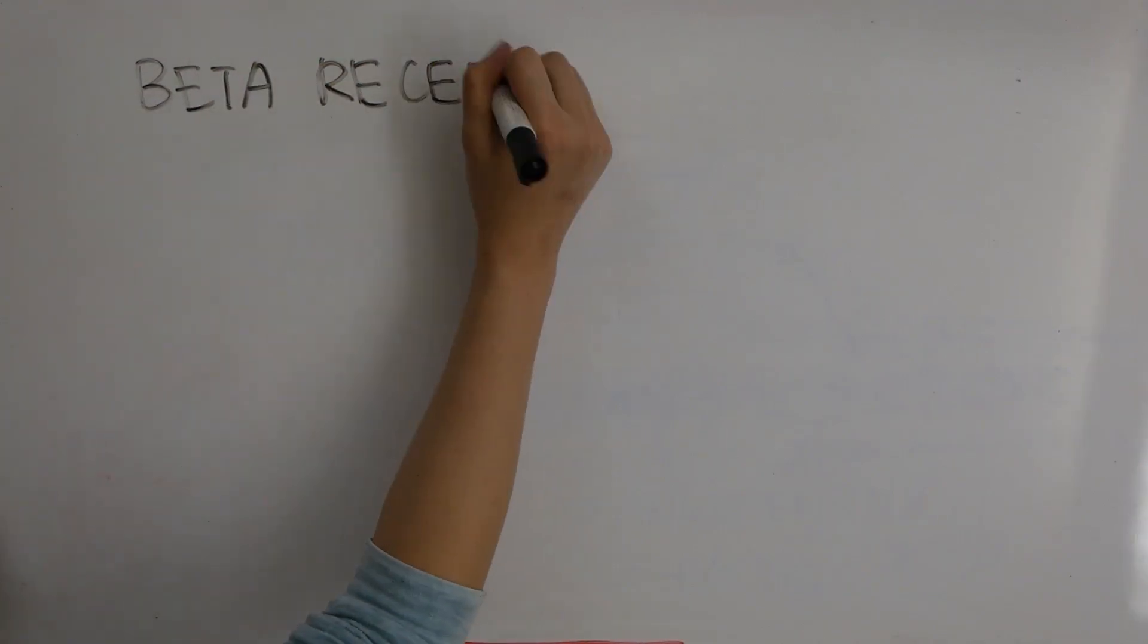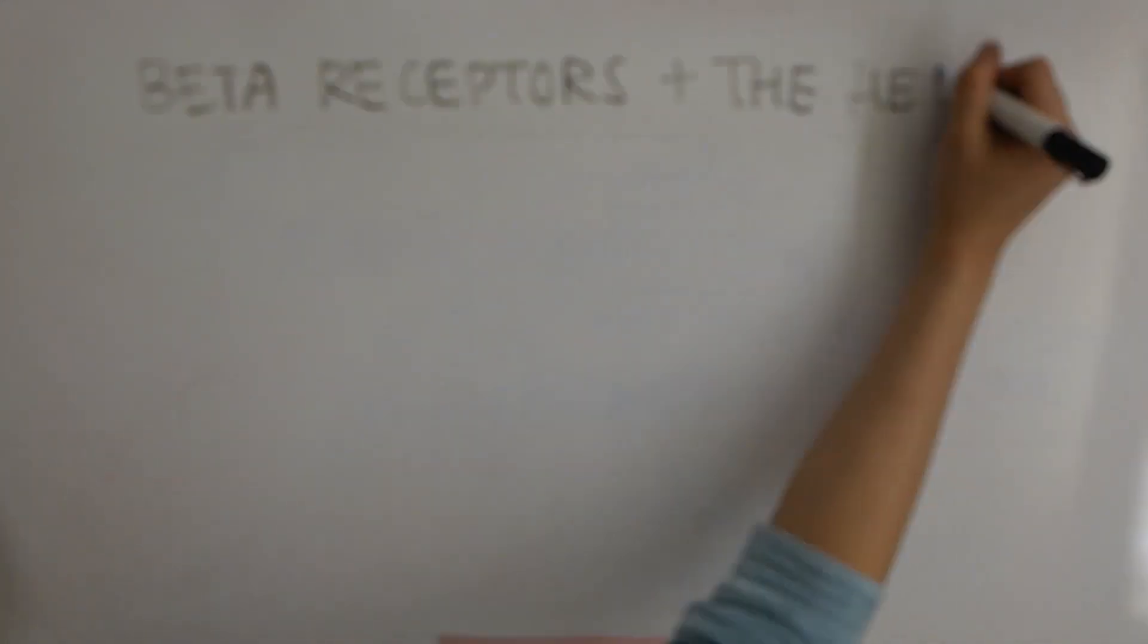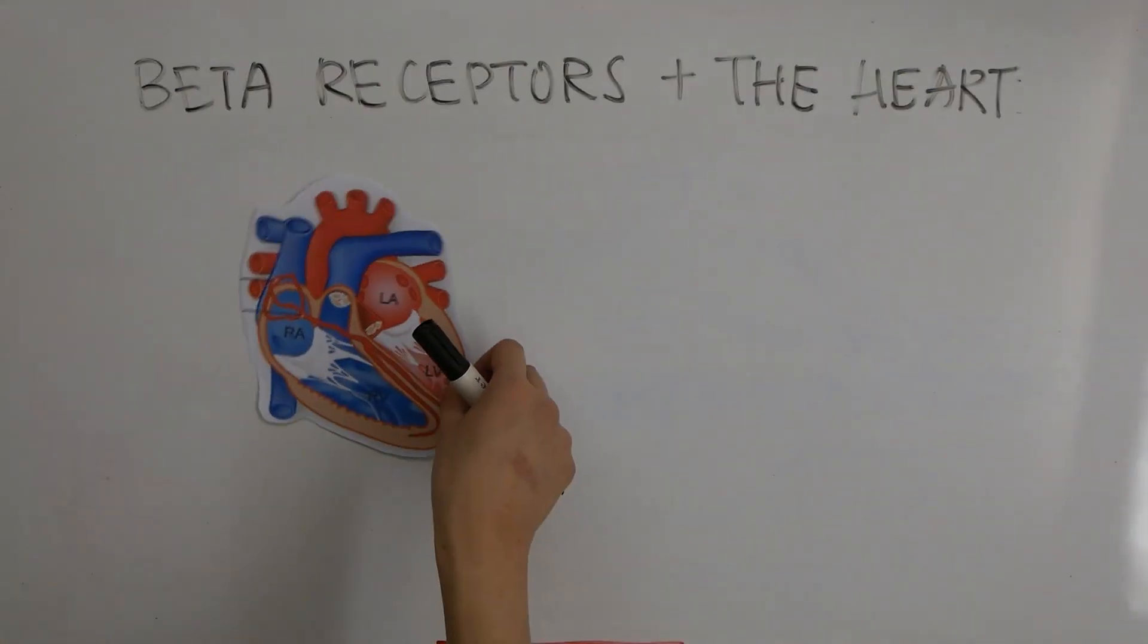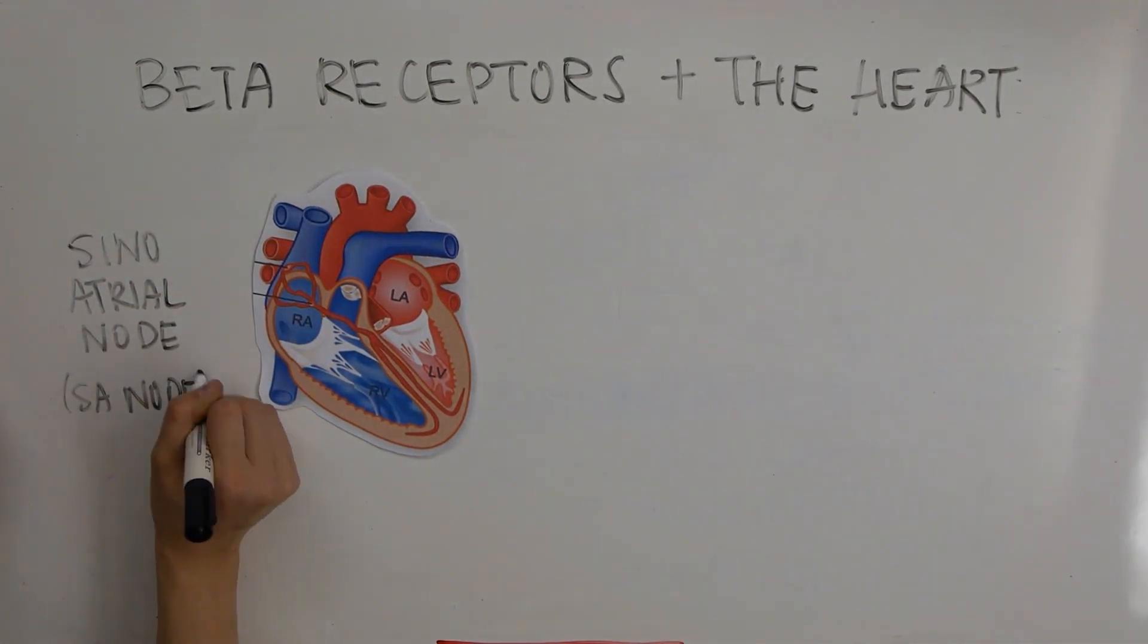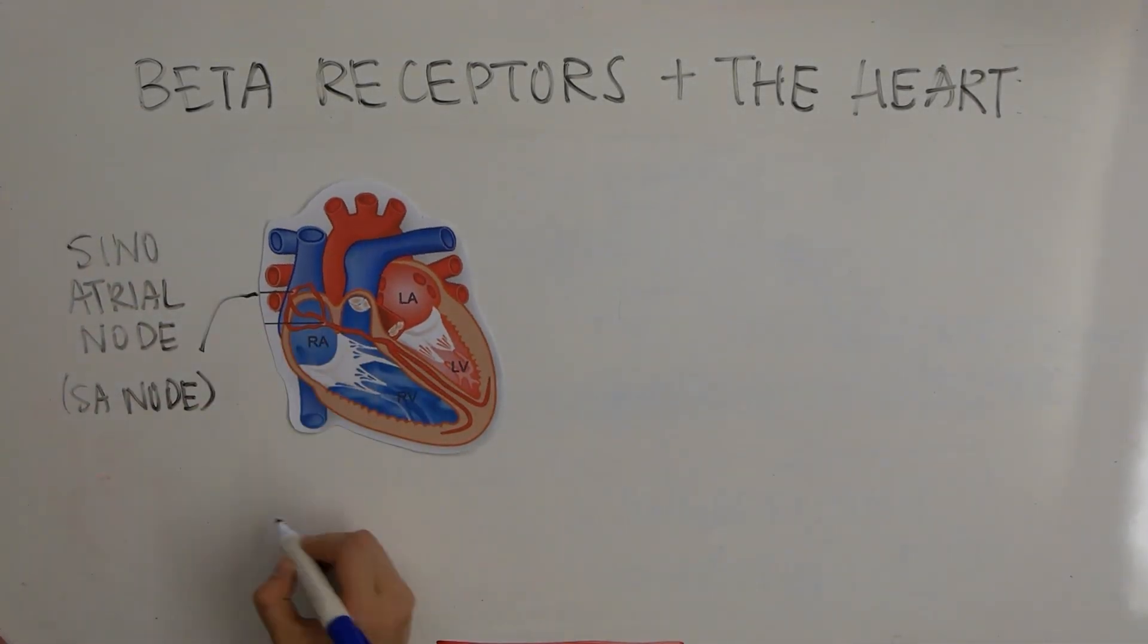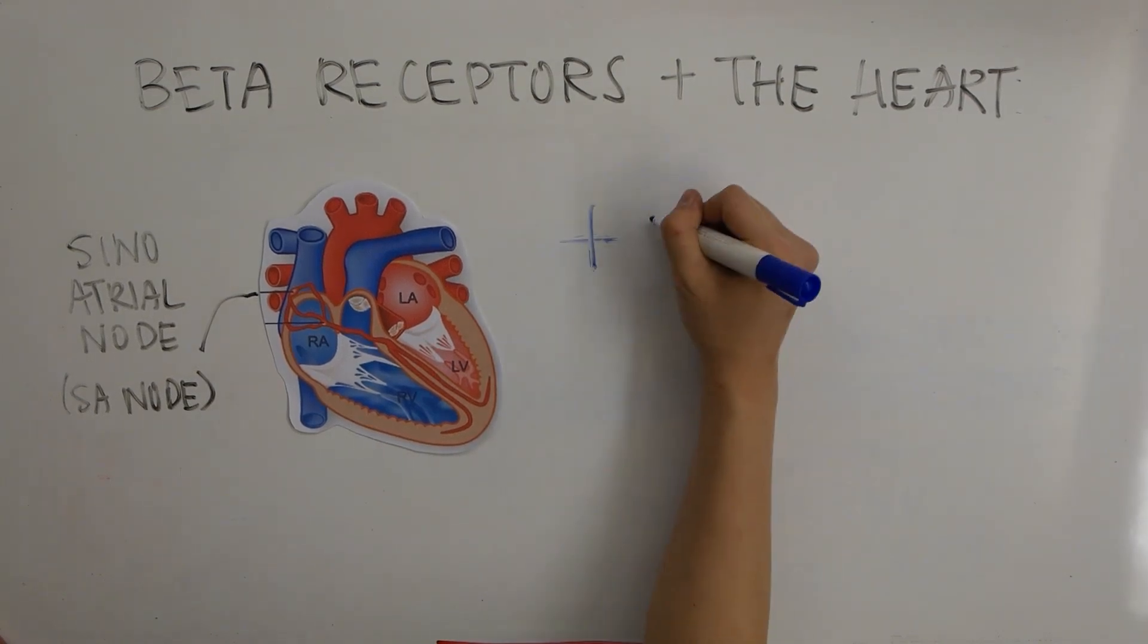thus resulting in a decreased arterial pressure. Beta receptors found in the heart are located in the sinoatrial node and in the myocardium, and they both have roles in regulating heart rate and cardiac contractility. When these receptors are stimulated